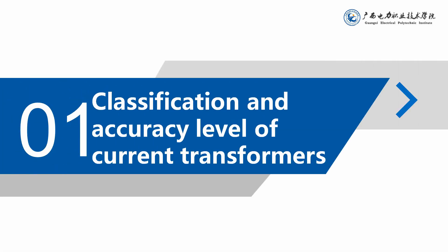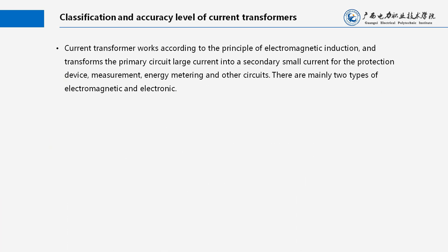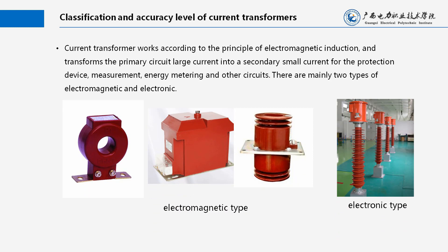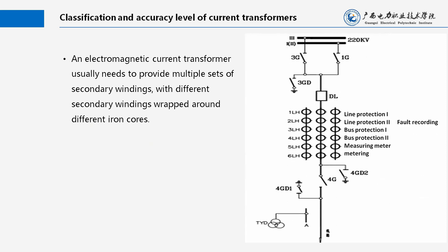Classification and Accuracy Level of Current Transformers. A current transformer works according to the principle of electromagnetic induction and transforms the primary circuit large current into a secondary small current for the protection device, measurement, energy metering and other circuits. There are mainly two types: electromagnetic and electronic. An electromagnetic current transformer usually needs to provide multiple sets of secondary windings, with different secondary windings wrapped around different iron cores.